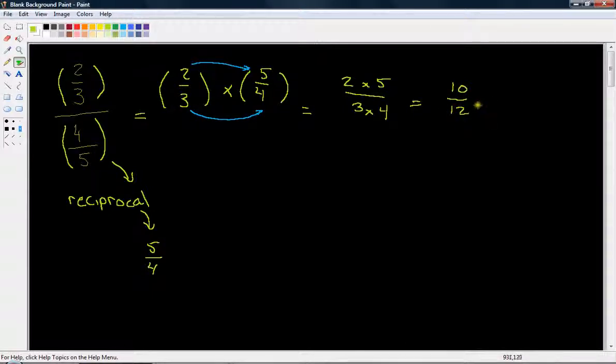And we can reduce that. We can divide the numerator and the denominator by 2. We can see 2 divides 10, and 2 divides 12. So 10 divided by 2, well that's 5. 12 divided by 2 is 6. So our final answer would be 5 over 6.